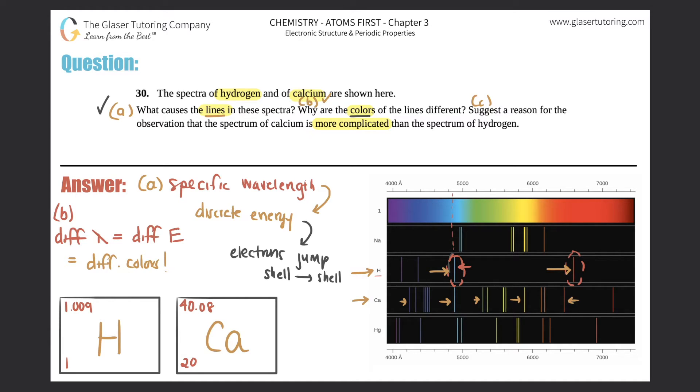And now for part C, it says suggest a reason for the observation that the spectrum of calcium is much more complicated than the spectrum of hydrogen. If we just look at this for calcium, look at all these lines, but for hydrogen there's only four lines. Why is that?